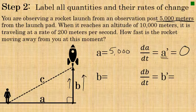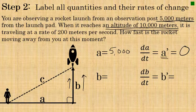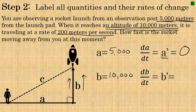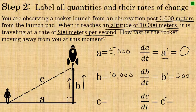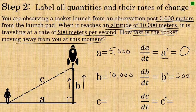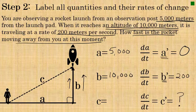That's not the case with side B. The problem says that at this exact moment the rocket is at an altitude of 10,000 meters, so side B is 10,000. It also tells us the rate of change of side B: the rocket is moving at 200 meters per second, so B prime is 200 meters per second. Side C — the hypotenuse — represents the distance from you to the rocket. The rate at which it's changing, C prime, is what we're trying to find in this problem.